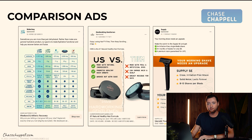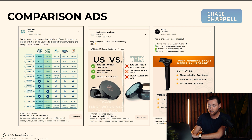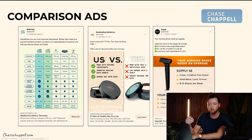The first ad format that converts and can be very scalable is a comparison style ad. We have two of our clients here — Waterboy, where they did a comparison ad, and Hardworking Gentlemen. We also have Supply here as well. This is a comparison style ad because it's comparing your product against another company's product. Waterboy is comparing against Liquid IV, Pedialyte, and Gatorade, highlighting the actual ingredients and the main differences in the product, showing consumers why they wouldn't go with the current brand they're using and why they should switch to yours.